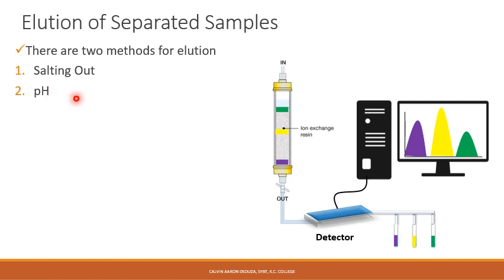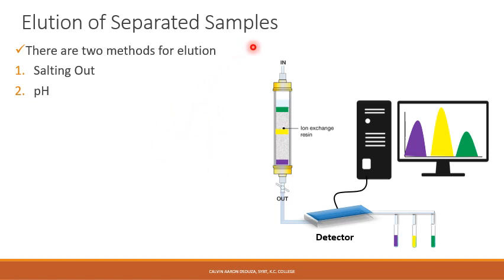The second elution technique is the pH technique, which works on similar logic to what we discussed for separation. Instead of increasing or decreasing the pH to change the protein's charge, we use a buffer solution that has a pH similar to the PI of the protein. So if this protein has an isoelectric point of 5, we use a buffer with pH 5. When this buffer is allowed to pass through the column, it renders the protein to have no charge or zero charge. As the protein has zero charge, it will not attach itself to the beads or charge groups and will be eluted out easily.